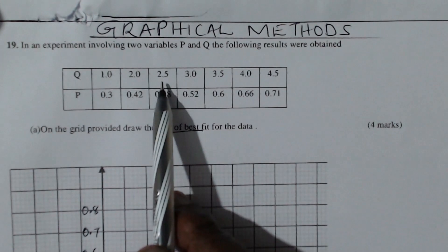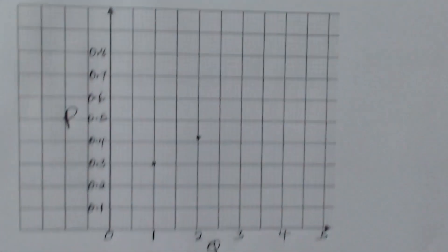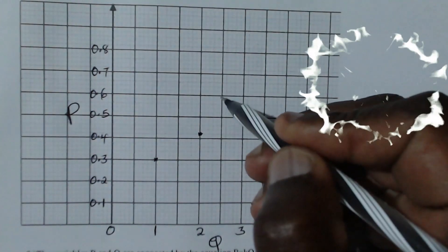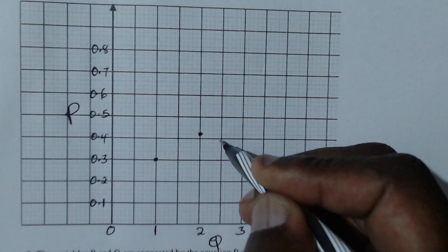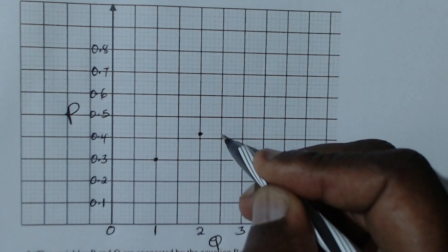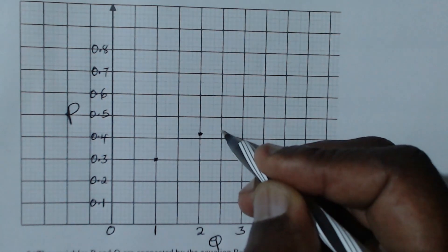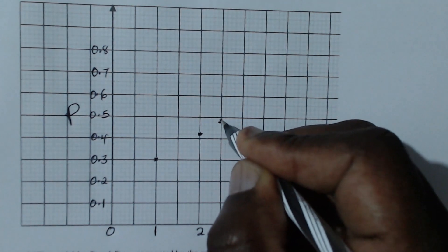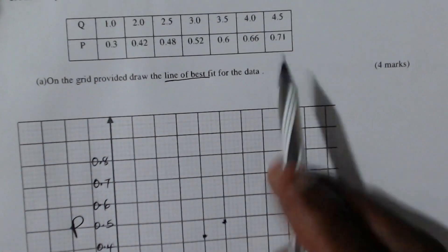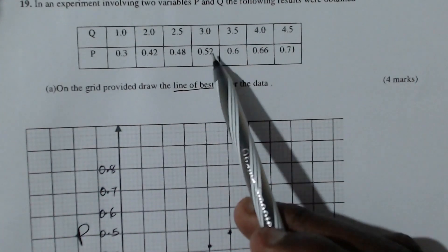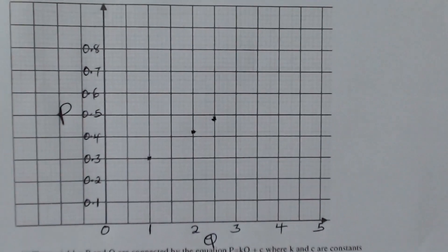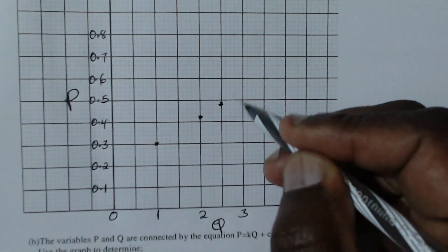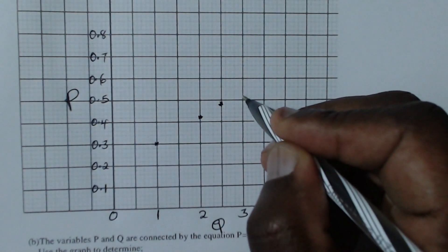The next point is (2.5, 0.48). Q equals 2.5 and p equals 0.48 — that is here. Then the next point is (3.0, 0.52) — q equals 3.0 and p equals 0.52, plotted here.